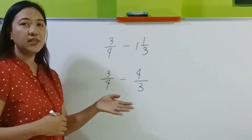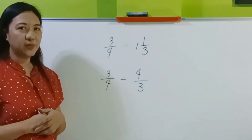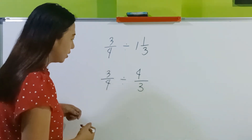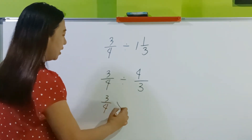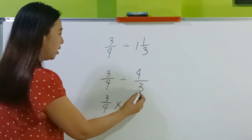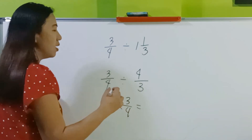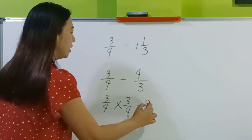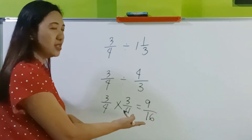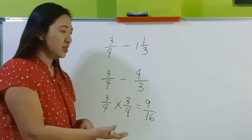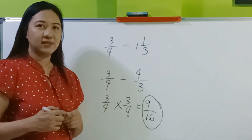You may proceed now to the steps in division of fractions. You may do the long cut, the shortcut, or the shorter cut of shortcut if applicable. So let's do the long cut: 3 fourths times the reciprocal of 4 thirds, which is 3 fourths. Proceed to multiplication: 3 times 3 is 9, 4 times 4 is 16. Can we still simplify this fraction? Not anymore. So the final answer is 9 sixteenths.